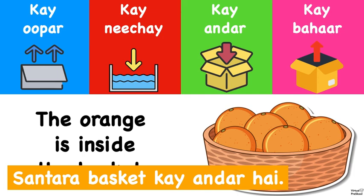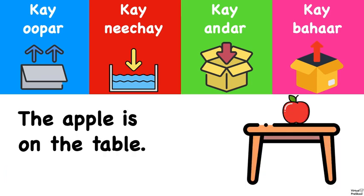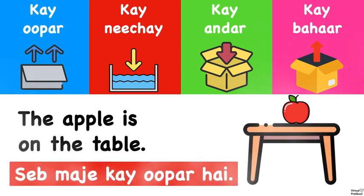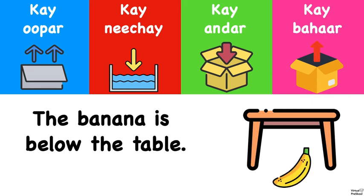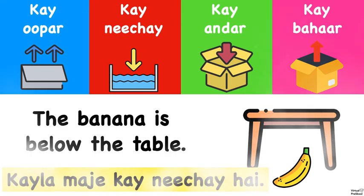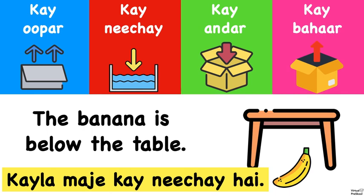So in Hindi, again, it's subject, object, verb. The apple is on the table. Seb mej ke upar hai. Last one - the banana is below the table. And if you didn't know that table is mej, that's okay, you can just say the word table. So kela mej ke neiche hai.